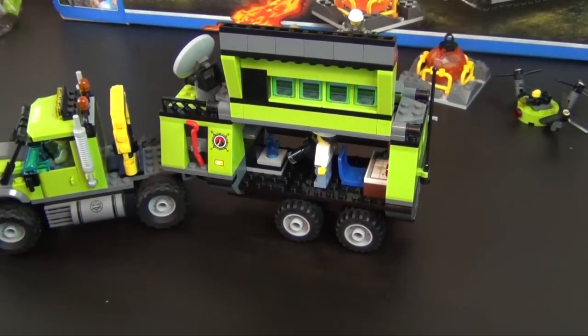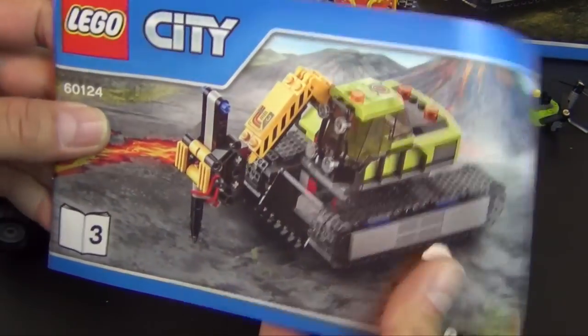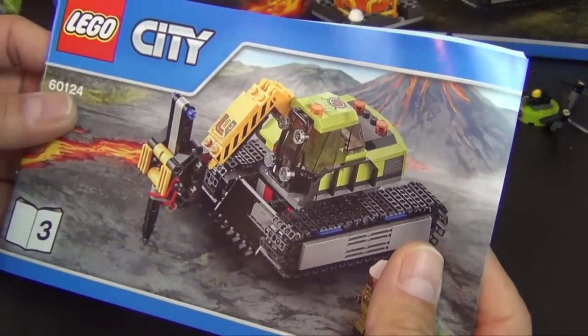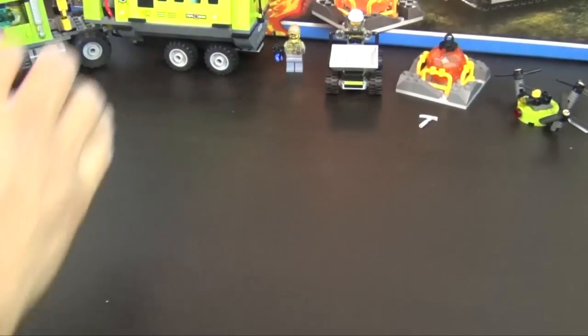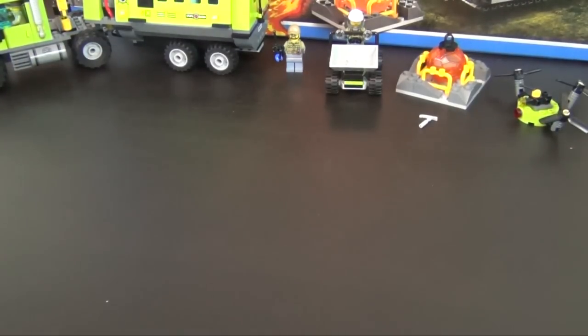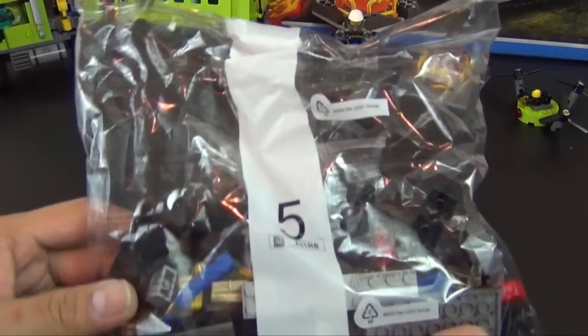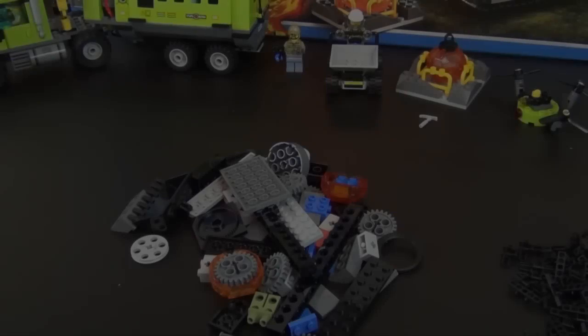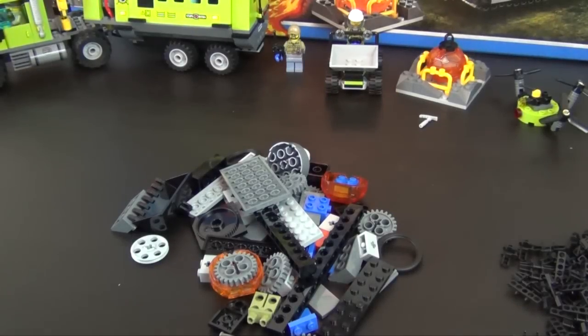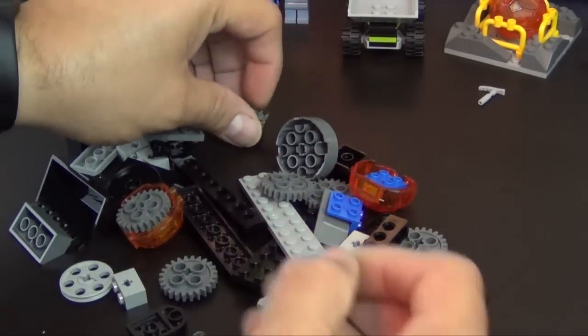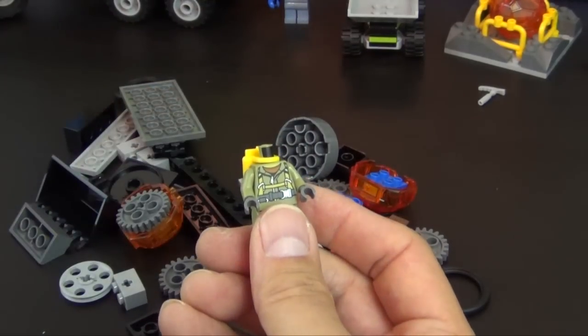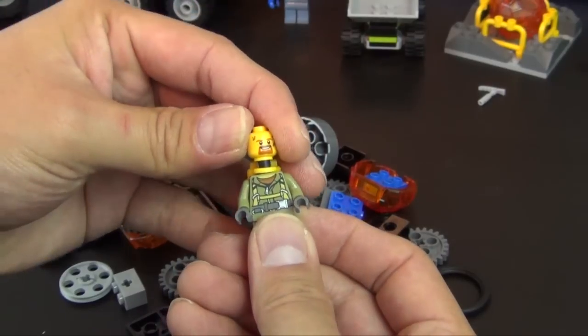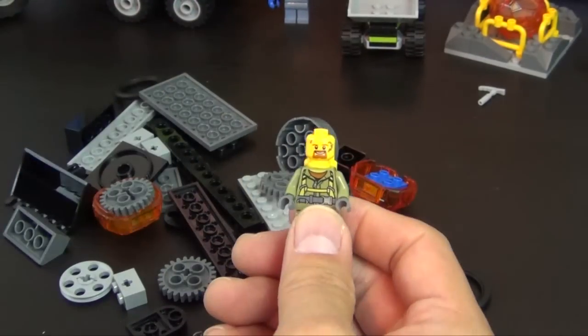Alright, so that completes instruction book number two. We are going to move on to instruction book number three which looks like it will build this little rock chipper thing. So maybe we are going to start bag number five right now. Okay, we have all of the parts for bag five dumped out. We do have a minifigure in this bag, it's one of the explorers that's going to be out in the field so he needs to have his protective gear on.